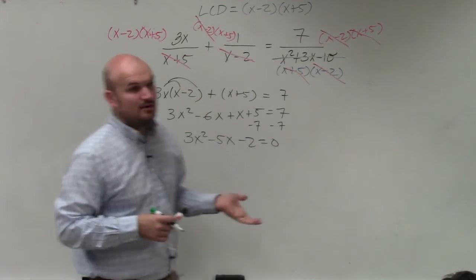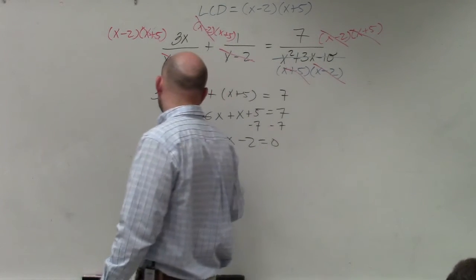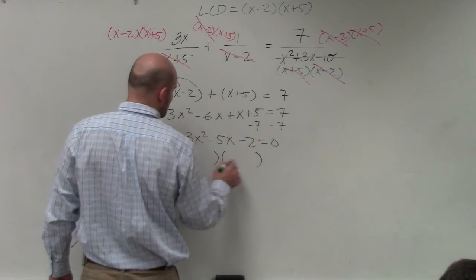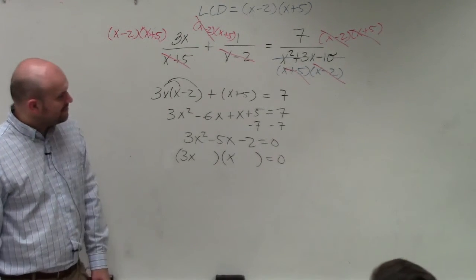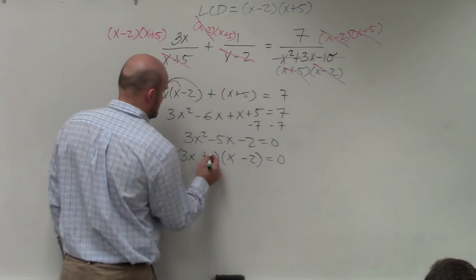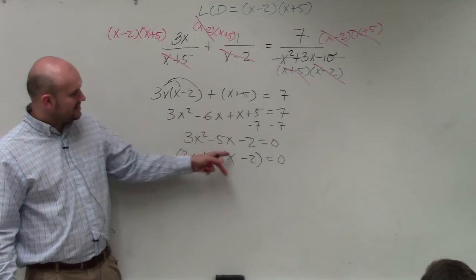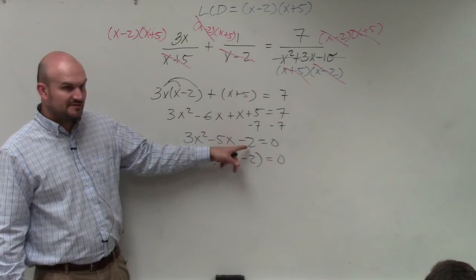Now the next thing I want to do is determine, is this factorable? Can I factor this? So basically, I want to be able to see 3x and x. Well, I know that the first two terms have to multiply to give me 3x squared. And the last two terms have to multiply to give me negative 2. Well, watch. Does 3x times x give you 3x squared? Yes. Does 1 times negative 2 give you negative 2? Yes.